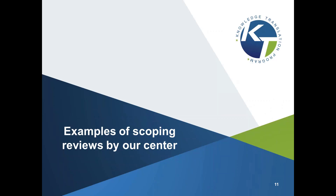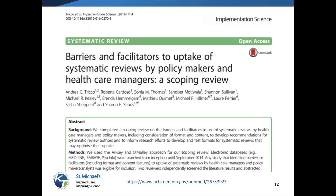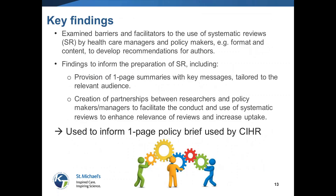In terms of examples of reviews we've done, we published a scoping review on the barriers and facilitators to uptake of systematic reviews by policymakers and healthcare managers, published in Implementation Science. We were looking at items such as format and content, and wanted to develop recommendations for authors. We found that when preparing a systematic review, a one-page summary with key messages tailored to the relevant audience is particularly helpful. We also found that creating partnerships between researchers and policymakers or managers can help facilitate the conduct and use of reviews, enhancing relevance and increasing uptake.